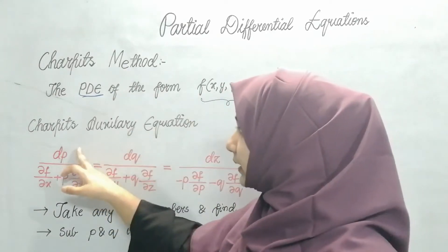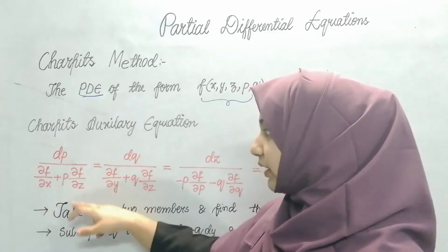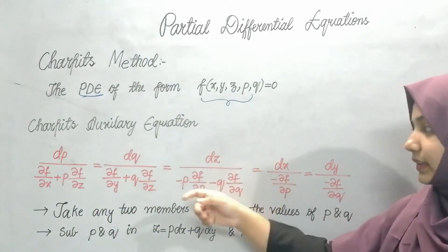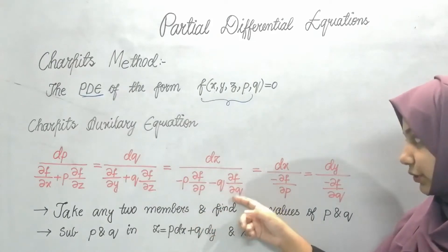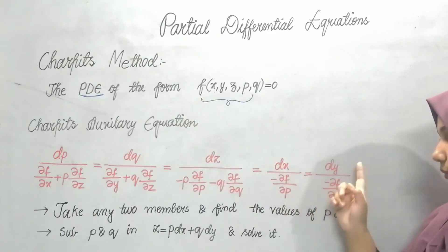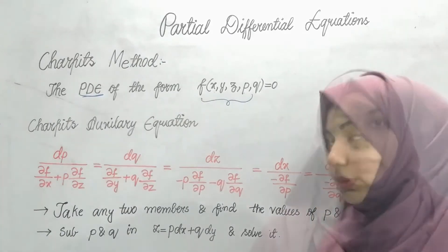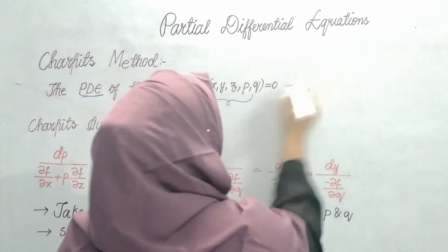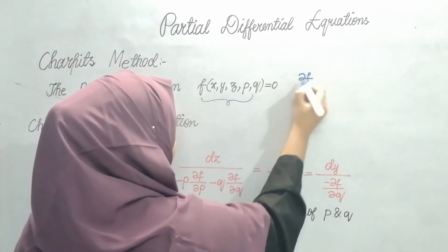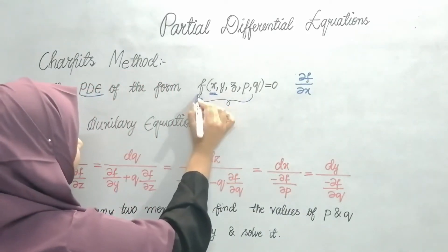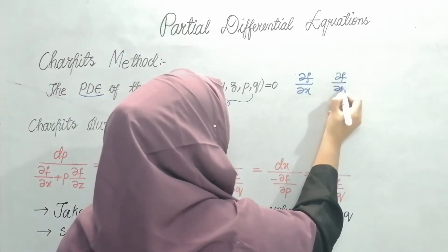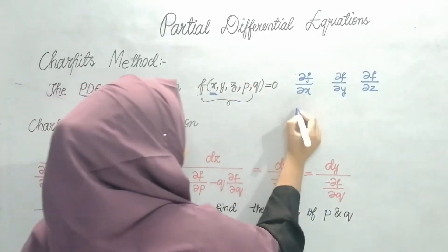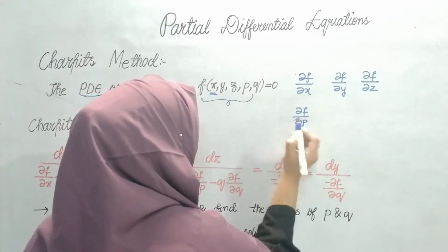The auxiliary equation is: dp / (∂f/∂x + p·∂f/∂z) = dq / (∂f/∂y + q·∂f/∂z) = dz / (p·∂f/∂p - q·∂f/∂q) = dx / (-∂f/∂p) = dy / (-∂f/∂q). Here I have all these terms x, y, z, p, q, so I need to differentiate f partially with respect to each: ∂f/∂x, ∂f/∂y, ∂f/∂z, ∂f/∂p, and ∂f/∂q.